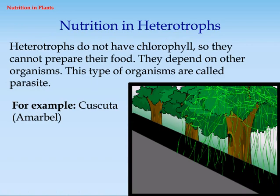Nutrition in heterotrophs. Heterotrophs do not have chlorophyll, so they cannot prepare their own food. They depend on other organisms. This type of organism is called a parasite. For example, Cuscuta.